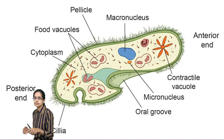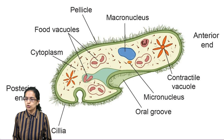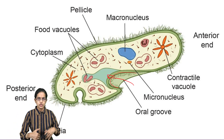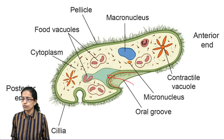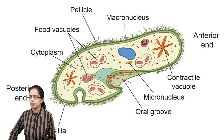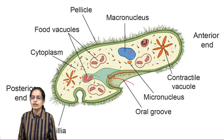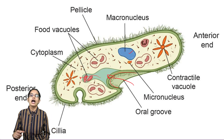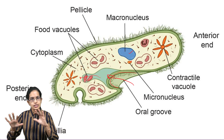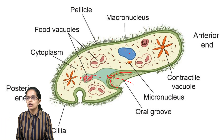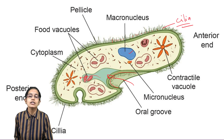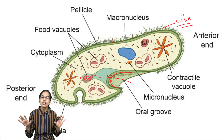Coming on to the next organism, which is paramecium. Paramecium has an oral groove, which is the place through which food ingestion takes place — the engulfing of food. The food vacuoles are taken through the oral groove into the body of the paramecium. It has two nuclei: the macronucleus and the micronucleus. It also has contractile vacuoles. Paramecium is a slipper-like structure with lots of hair-like structures on the surface called cilia, which are meant for movement and locomotion.